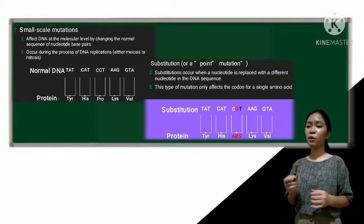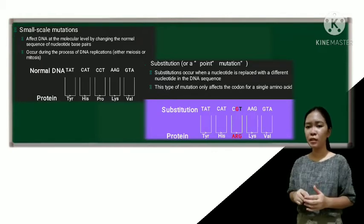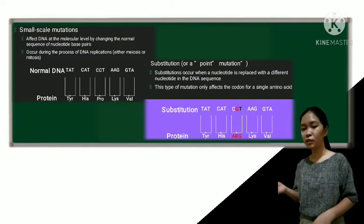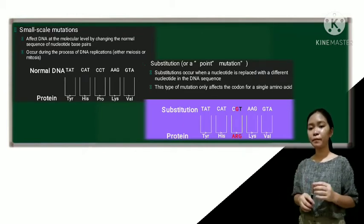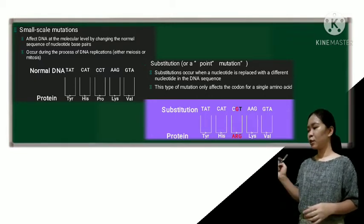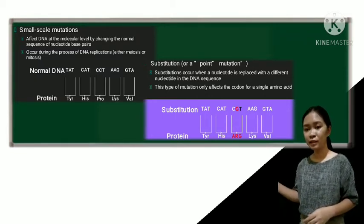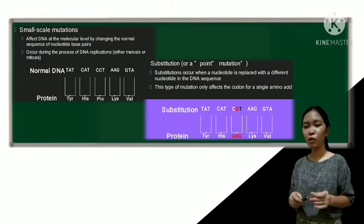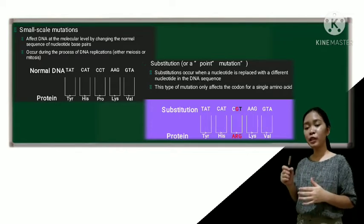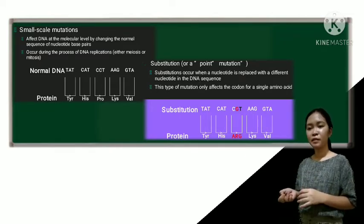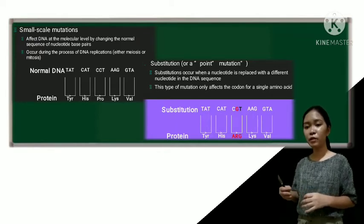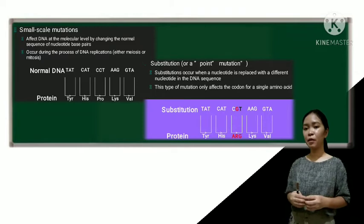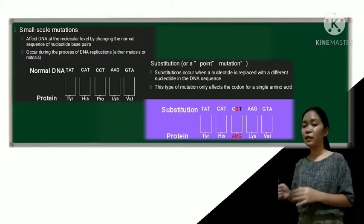Okay, so let's always remember that A is always paired with T, and that C is always paired with G. So to compare, we have here the normal DNA sequence with its protein translation, and the bottom is the substitution with its protein translation as well. So looking at the colored letter compared to the normal DNA sequence at the top, you will be able to notice that there is a substitution mutation going on when there is a single nucleotide switching into another nucleotide base pair that will result in different protein translation. Okay, so since the total number of nucleotides is conserved, this type of mutation only affects the codon for a single amino acid.